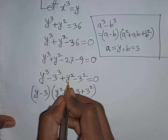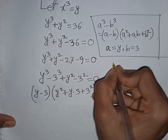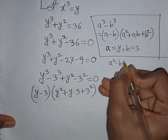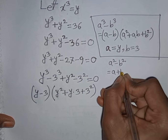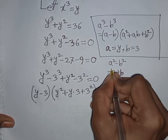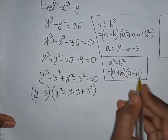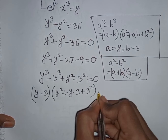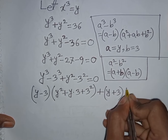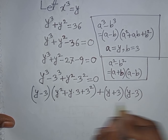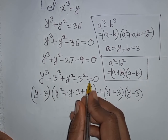For the remaining part, we apply the formula a square minus b square, where a is y and b is 3. According to this formula, a square minus b square equals a plus b times a minus b. So y square minus 9 equals y plus 3 times y minus 3. This is the formula of a square minus b square, and the full expression equals 0.